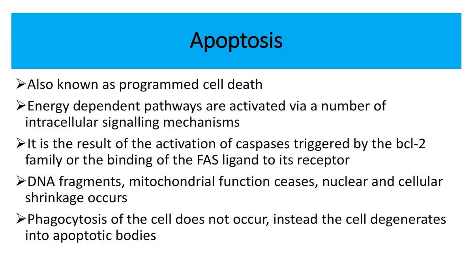In both necrosis and apoptosis, cell death occurs — but apoptosis is programmed cell death. This type of cell death is chosen by the body to remove unwanted cells. It is an energy-dependent pathway activated by a number of intercellular signaling mechanisms.